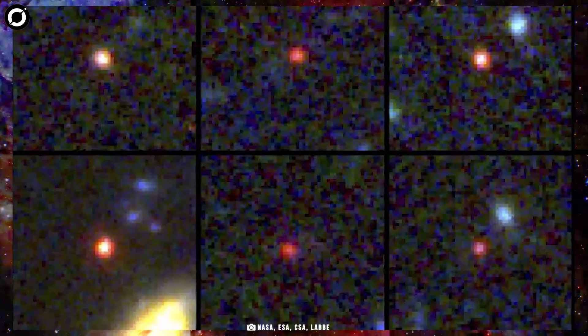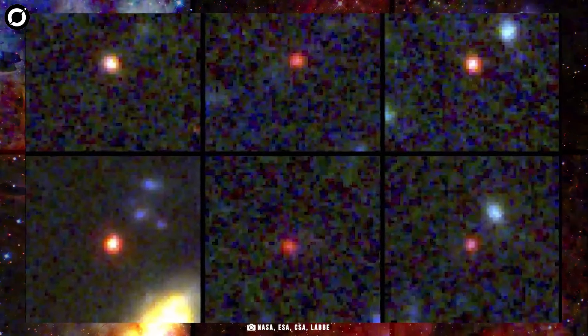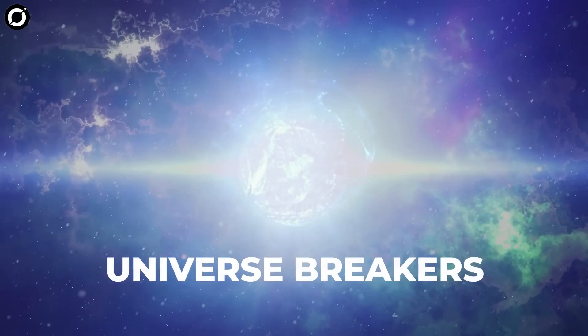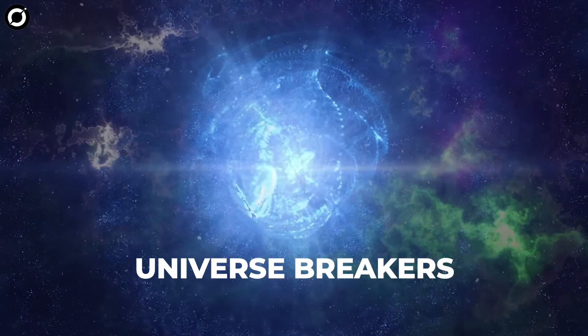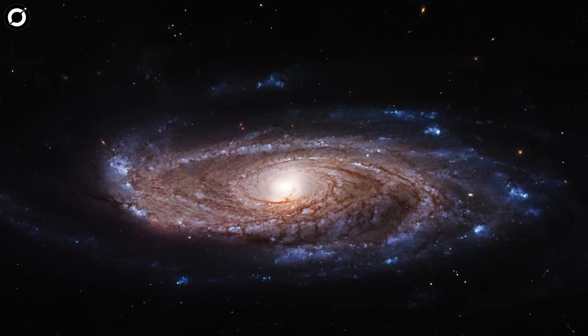The six gargantuan galaxies, which contain almost as many stars as the Milky Way despite forming only 500 to 700 million years after the Big Bang, have been dubbed universe breakers by the team of astronomers that spotted them.